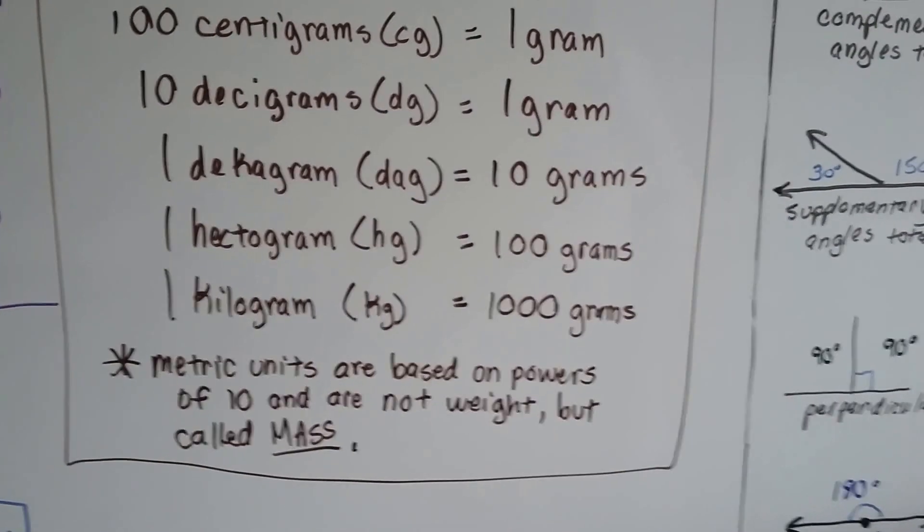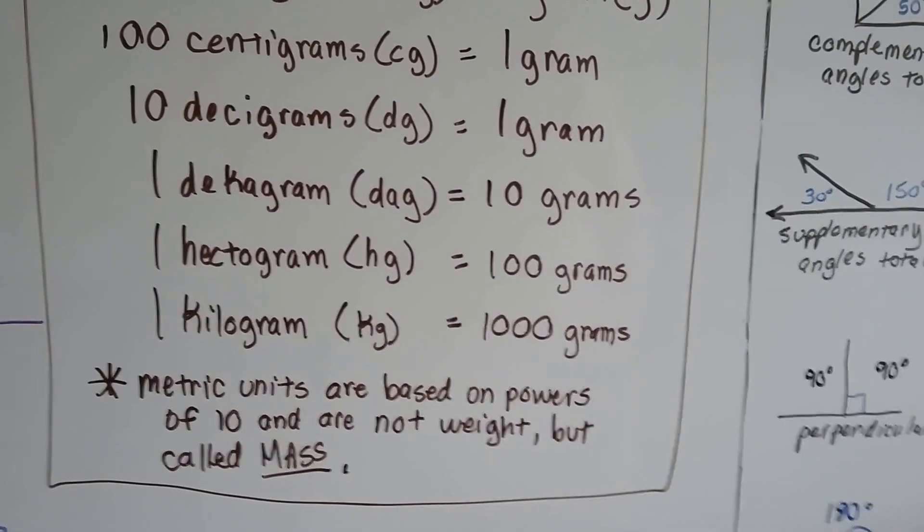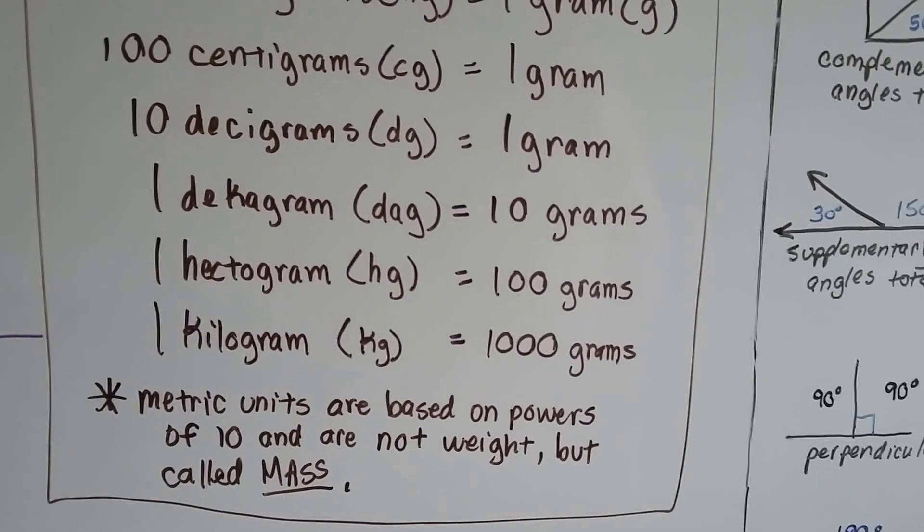So metric units are based on powers of 10. They're very easy to convert between. And are not weight, but are called mass.